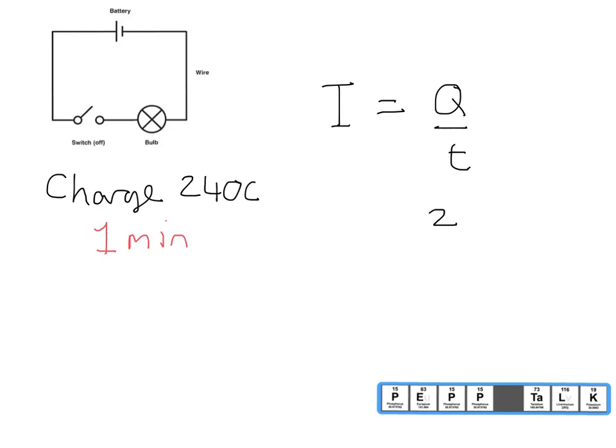So in this case we've got a quantity of charge of 240 coulombs and the time it takes is one minute, but we need the time in seconds. So I'm going to convert the minute to 60 seconds. So the amount of current flowing is 240 divided by 60, is a total of four, and we measure current in amps.